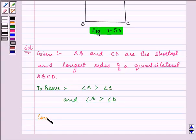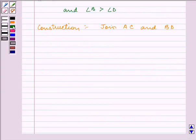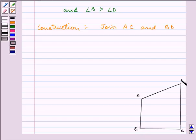So for that, we need to do a little bit of construction. First of all, we need to join AC and then we need to join BD. Let us draw the given figure once again. This is A, B, C and D.